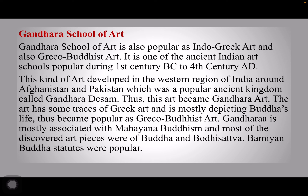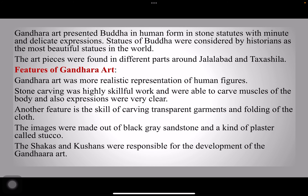Bhamyan Buddha statues were very popular — Bhamyan being a notable place. Gandhara art presented Buddha in human form in stone statues with minute and delicate expressions. Statues of Buddha were considered by historians as the most beautiful statues in the world. The art pieces were found in different parts around Jalalabad and Takshasila. Features of Gandhara art: it was a more realistic representation of human figures. Stone carving was highly skillful work and artists were able to carve muscles of the body, and expressions were very clear. Another feature is the skill of carving transparent garments and foldings of cloth. Images were made out of black, grey, or sandstone and a kind of plaster called Stucco. Sekas and Kushans were responsible for the development of Gandhara art.